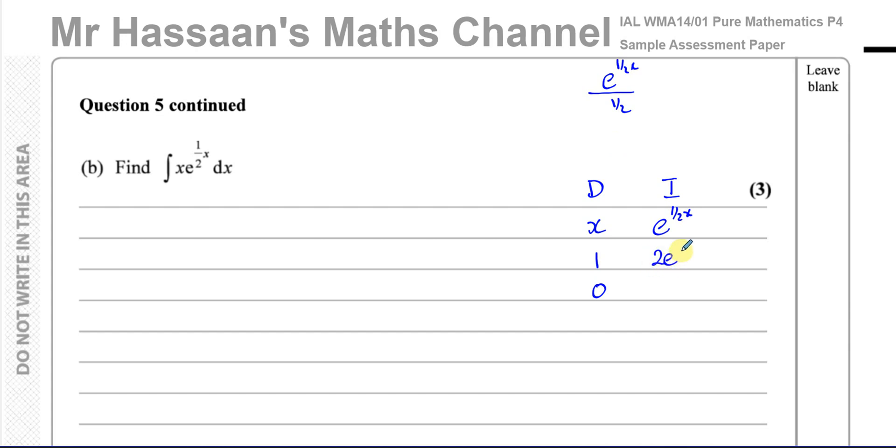And if I integrate it another time, I'm going to get 2e to the power of a half x stays the same again, divided by a half, which will be like multiplied by two. So I end up with 4e to the power of a half x.